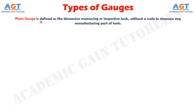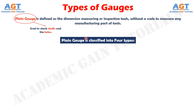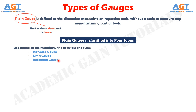Now let's discuss about the types of gauges in metrology. Plain gauge is defined as the dimension measuring or inspective tools, without a scale to measure any manufacturing part of tools. In order to check shafts and the holes, plain gauge is used. Plain gauge is classified into four different types. Depending on the manufacturing principle and type, the plain gauges can be classified as standard gauge, limit gauge, indicating gauge, and combination gauge.